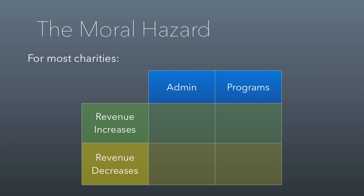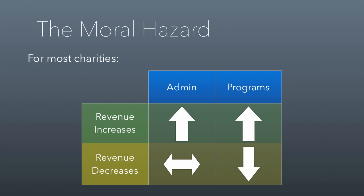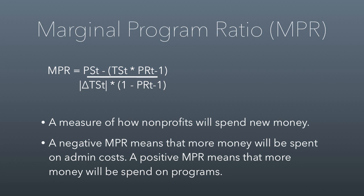The paper you read makes the point that for most charities, when revenue increases, admin costs and program costs both go up, and they tend to go up by the same amount. But interestingly, when revenue decreases, admin costs tend to stay the same whereas program costs tend to go down. So when nonprofits are short on revenue, the first thing they do is cut programs — that's because the people making these decisions are administrators and they don't want to fire themselves. The paper measures a change in program ratio to create what's called a marginal program ratio.